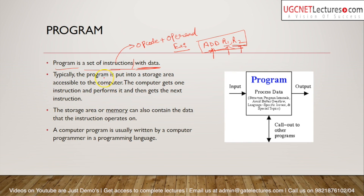A program is stored in memory. The CPU picks instructions one by one from memory and executes them. The memory can also contain the data that the instructions operate on. According to von Neumann architecture, to execute a program it must be in memory along with its data. Memory always contains instructions and data, and the operating system is always present in memory and always running.